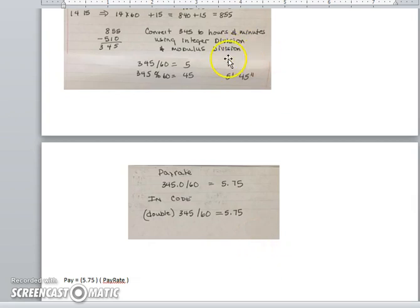However, when you're working with these numbers, the 345 and the 60, those are actually integer values stored in the computer. So if you tried to do this within your code it's not going to work because it's going to revert back to integer division and give you 5.